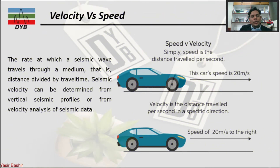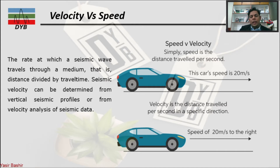Before we go into the detail of seismic velocity, let's start with velocity and speed, because there is always some confusion. Velocity is actually the speed of something but with direction — it is the rate at which the seismic wave travels through a medium, which is the distance divided by the travel time. In mathematical notation: s = v × t.